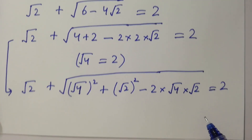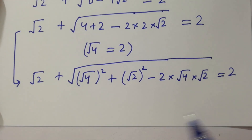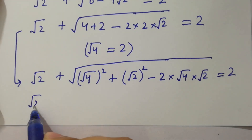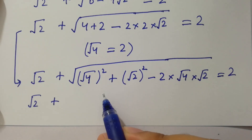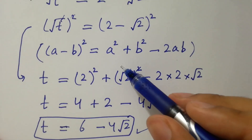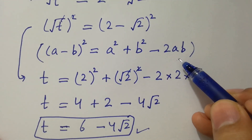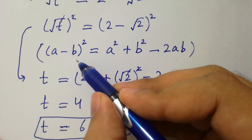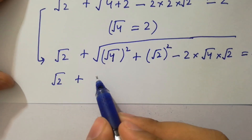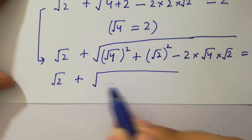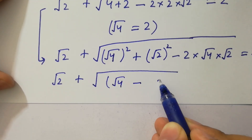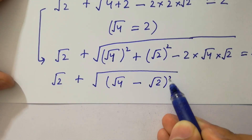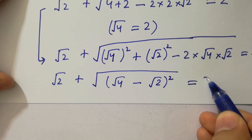We have square root of 2 as it is, plus, and this here has the formula of a squared plus b squared minus 2ab. Then we have square root of 4 minus square root of 2, whole squared, equal to 2.